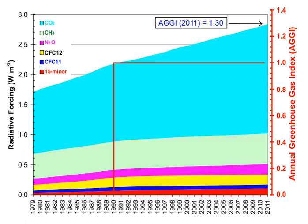Atmospheric concentrations are determined by the balance between sources — emissions of the gas from human activities and natural systems — and sinks, the removal of the gas from the atmosphere by conversion to a different chemical compound or absorption by bodies of water.